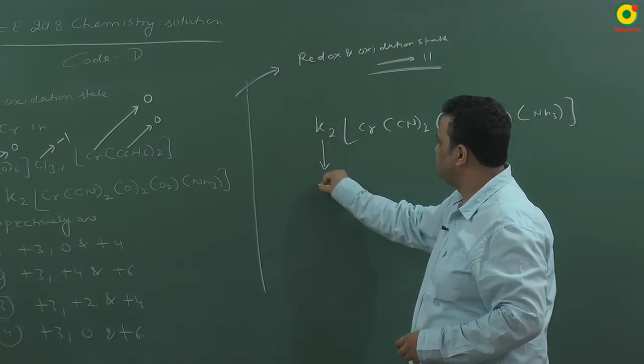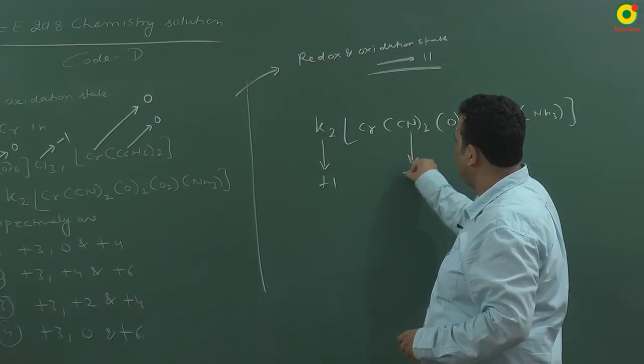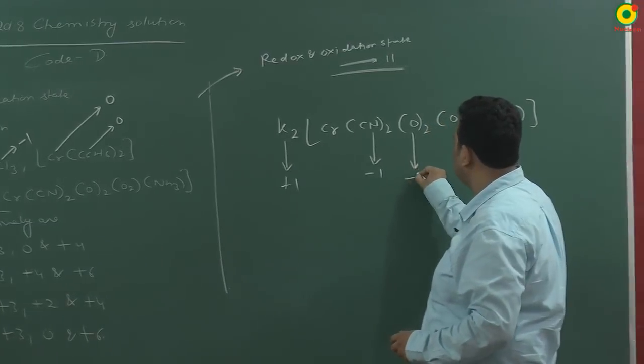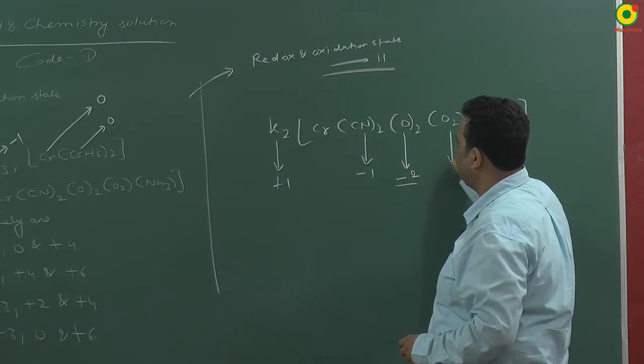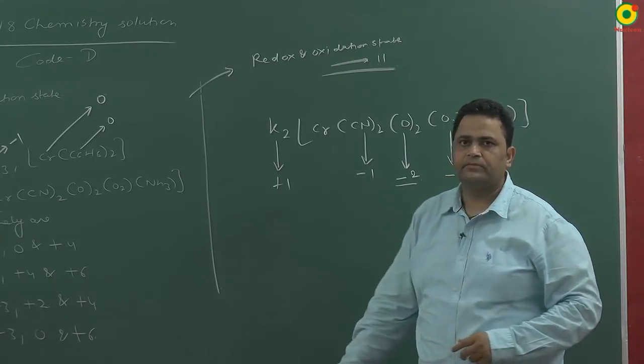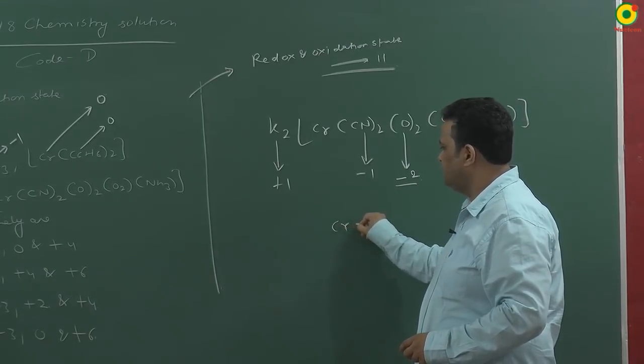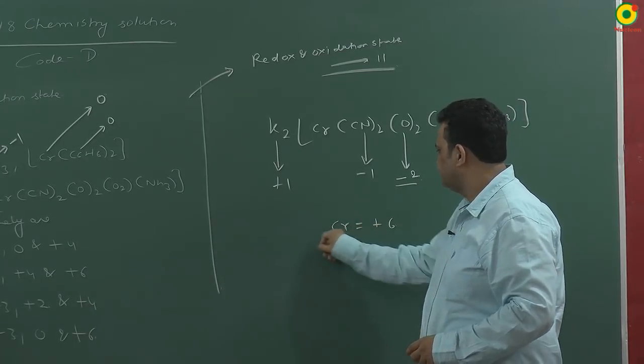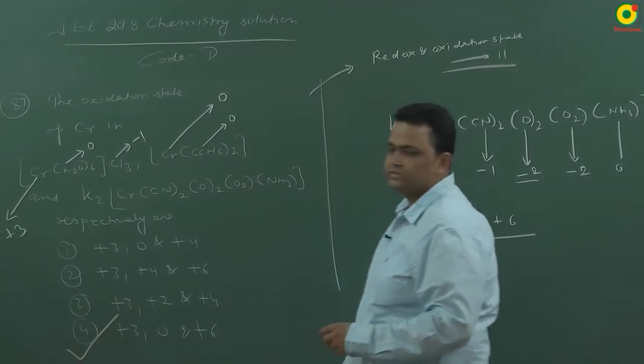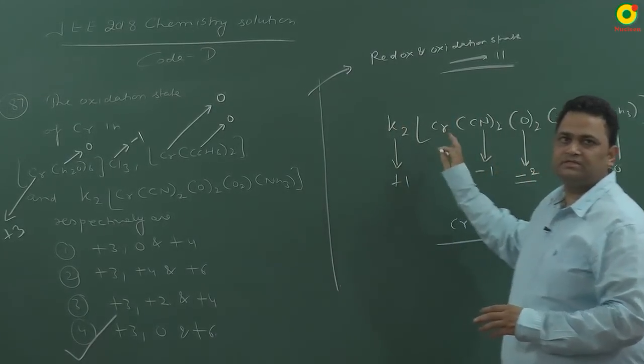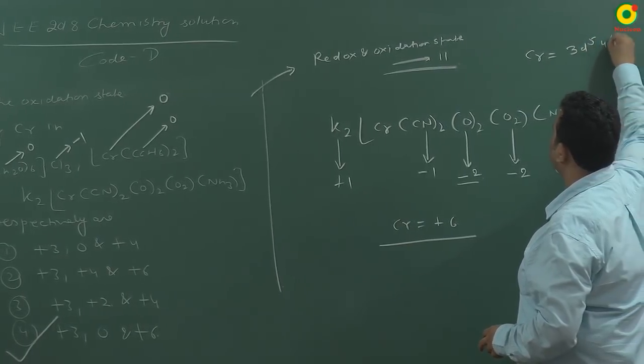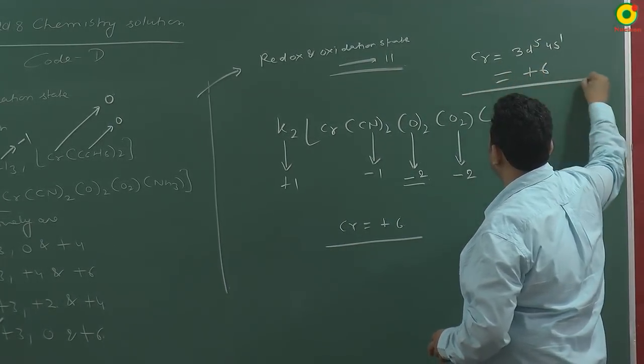In this compound potassium is in plus 1, cyanide ion is in minus 1 state, single O ion is in minus 2 state and O2 could be taken in minus 2 state, ammonia is 0. So the state of chromium will be plus 6. The answer is plus 3, 0 and plus 6, because the configuration of chromium is equal to 3D5 4S1 so it can show plus 6 state also.